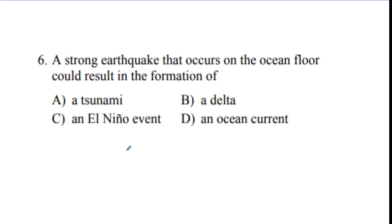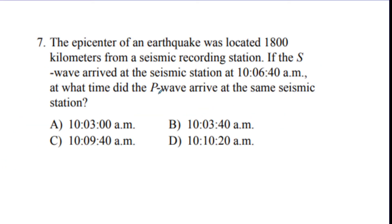Number six: a strong earthquake underwater could result in which of the following? The answer is A — a tsunami. Number seven is another chart question. The epicenter of the earthquake was located 1,800 kilometers from the station. If the S wave arrived at 10:06 and 40 seconds, what time did the P wave arrive?